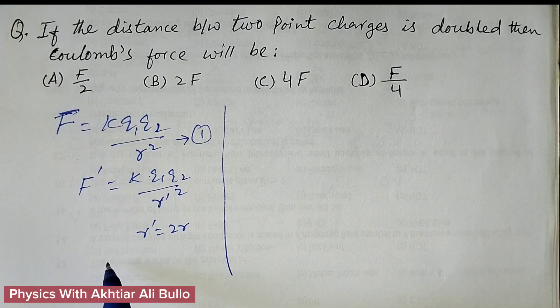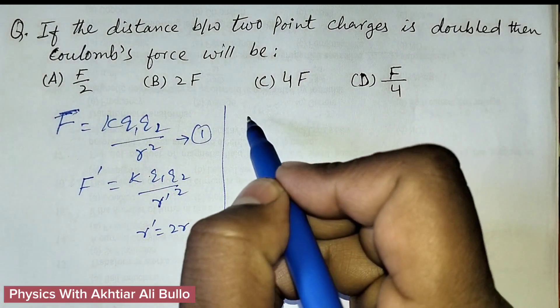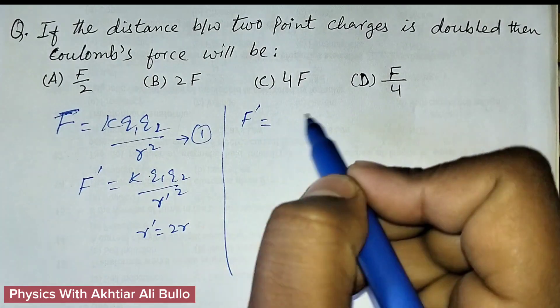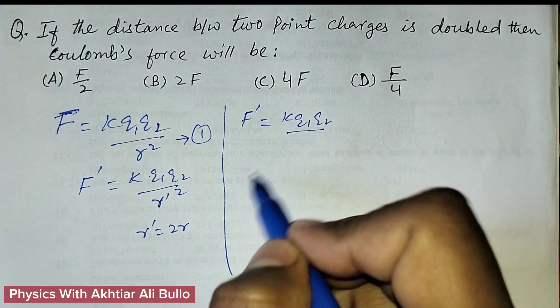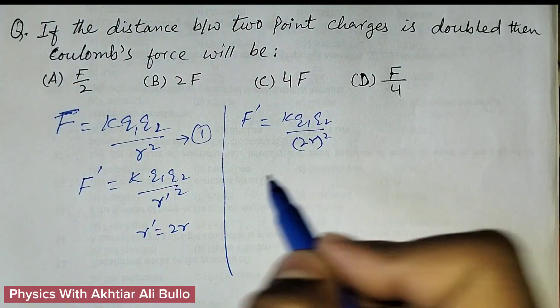So F dash will be equal to K Q1 Q2 upon 2R whole square.